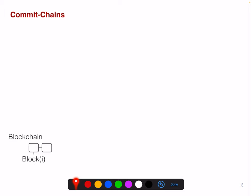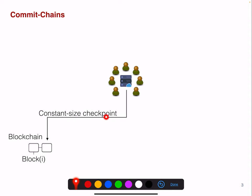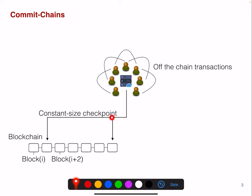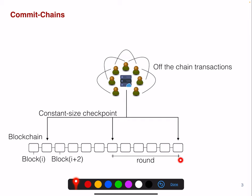So conceptually, what is a Commit Chain? We have a blockchain at block I, and let's assume we have a Commit Chain operator with several users taking part. What this operator does is provide a constant-size checkpoint to the blockchain. When users perform off-chain transactions, at some point in time the operator submits a new checkpoint to the chain. Some Commit Chain proposals specify a fixed interval at which this is done; some might not. The design space is quite large.